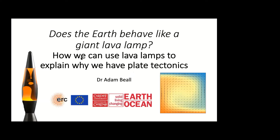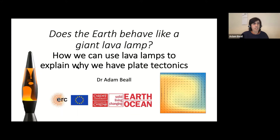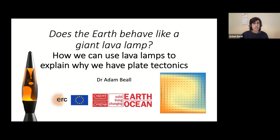What I'm going to be talking about today is, firstly, does the Earth behave like a giant lava lamp? That seems like a bizarre question given that a lava lamp sits on your desk and the Earth is this huge thing. The Earth moves very slowly while the lava lamp moves very quickly. I'll show you how they're actually quite similar and how we can use one to understand the other, and in doing so, answer the question: how can you use lava lamps — or rather, models of convection — to explain why we have plate tectonics on Earth?